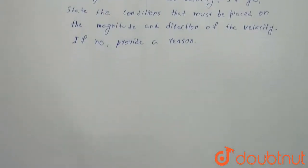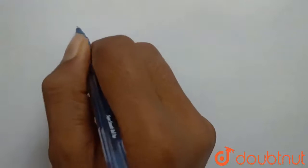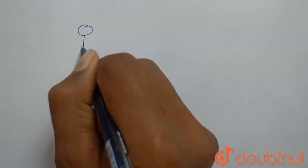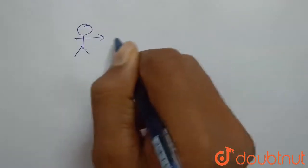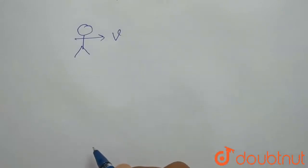So this is possible, let's see how. Suppose this is our object which is moving with v velocity and as the question says there is no external unbalanced force.